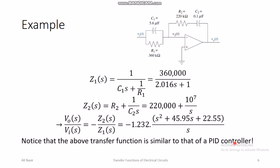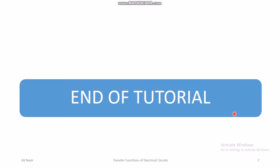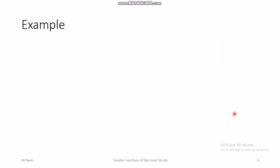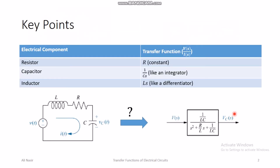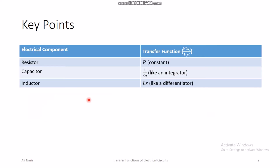Notice that this transfer function is very similar to the transfer function of a PID controller. This is how people used to implement PID controllers in the past using operational amplifiers. You can adjust the derivative, proportional, and integral gains by adjusting the values of C₂, R₂, C₁, and R₁. All of these calculations come from just the impedance table for R, L, and C.